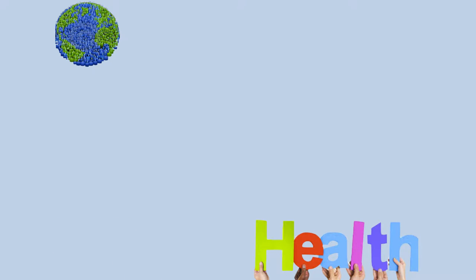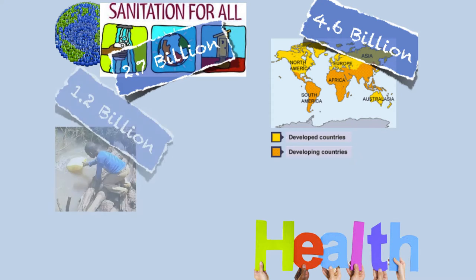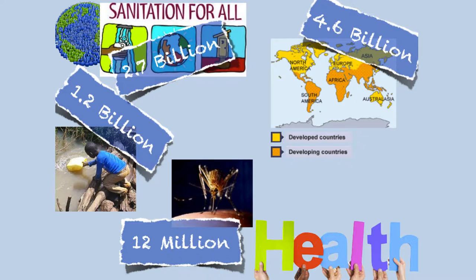After life expectancy, we can look at health. Health is defined as a state of complete physical, mental, and social well-being, and not merely the absence of disease or infirmity. This is a shift from viewing health as only the lack of disease. There are 4.6 billion people living in developing countries: 2.7 billion don't have proper sanitation, 1.2 billion don't have clean water, and 12 million die from diarrhea, malaria, and tuberculosis. Disease and illness rank much higher in lower per capita income countries.